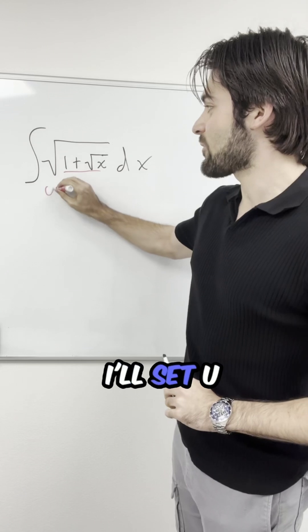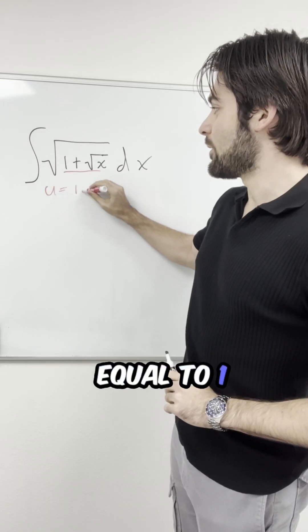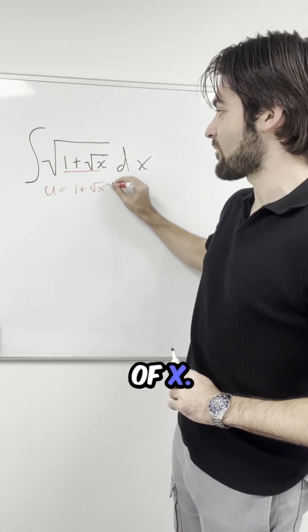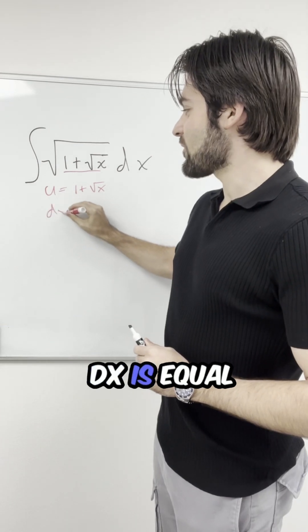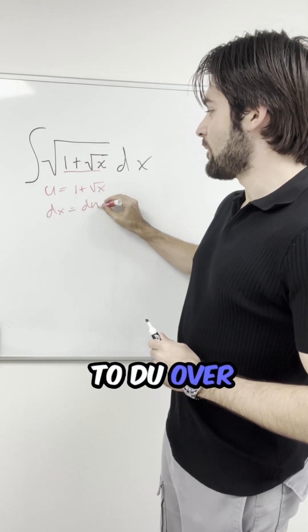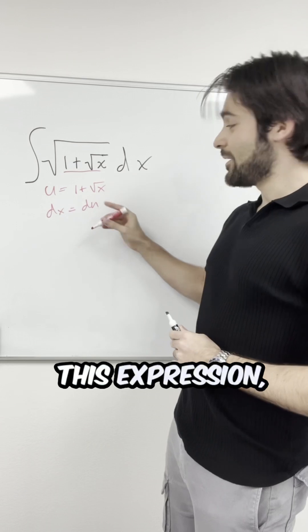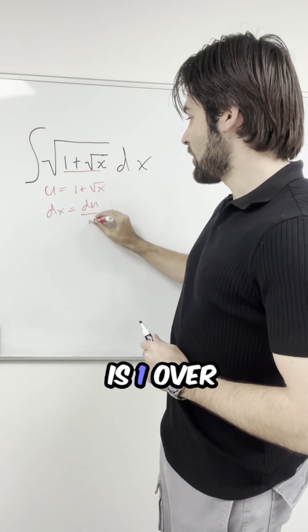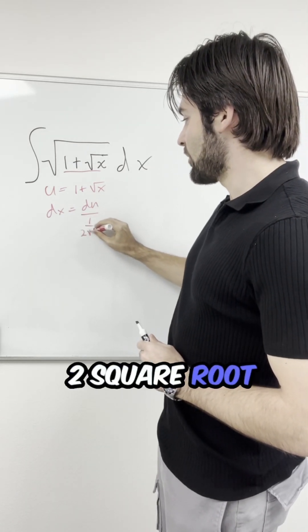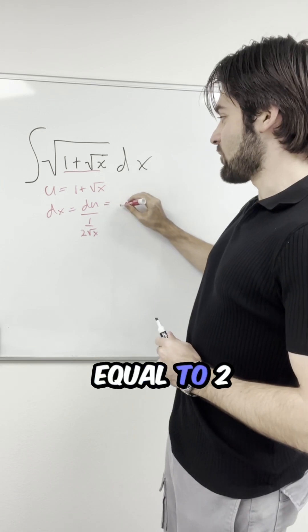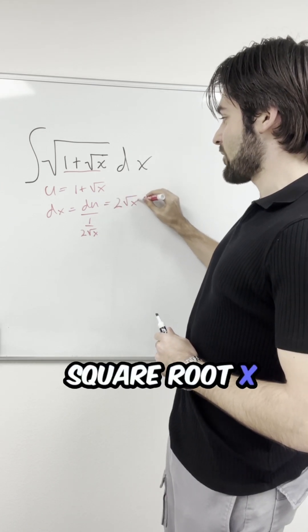In other words, I'll set u equal to 1 plus square root of x. This means that dx is equal to du over the derivative of this expression, which is 1 over 2 square root of x, meaning that dx is equal to 2 square root of x du.